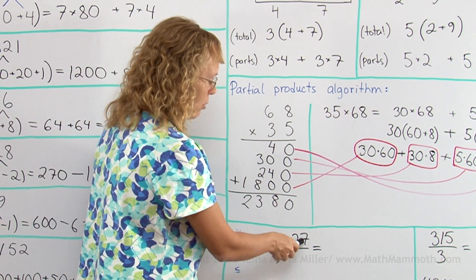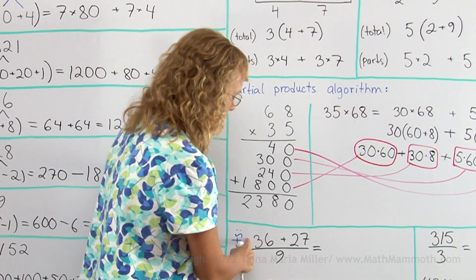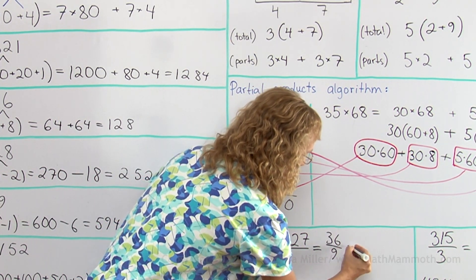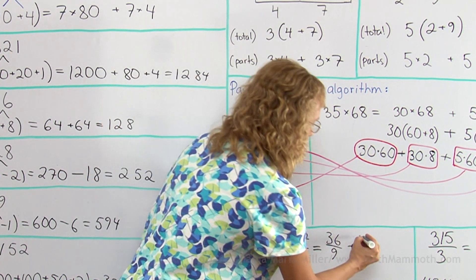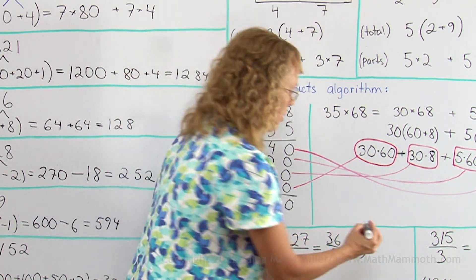36 by 9, and then 27 by 9, and then add. So I can write 36 divided by 9, and then add 27 divided by 9. This here is 4, this here is 3, so 7.